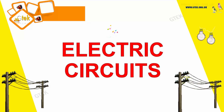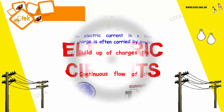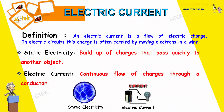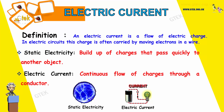Hello, welcome to GTech. Let's talk about electric circuits. Electric current — we have a definition framed for electric current. An electric current is a flow of electric charge. In electric circuits, this charge is often carried by moving electrons in a wire.